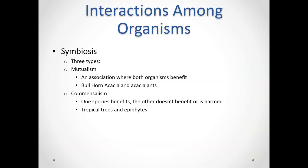A commensalist relationship is where one species benefits but the other doesn't benefit or is harmed at all. An example is tropical trees and epiphytes: a bromeliad plant lives on the tree, the tropical tree just acts as a place where the bromeliad lives. The tropical tree isn't harmed but also isn't getting anything from having this plant on it, while the bromeliad gets a nice place to live closer to the sun. We call that a commensalist relationship.